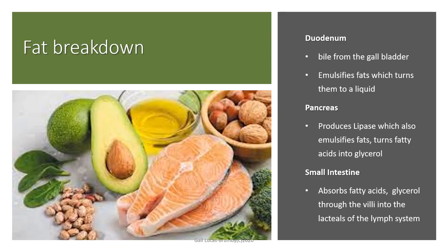To recap fat breakdown: nothing happens to fats in the mouth or stomach until we reach the duodenum. Bile, produced by the liver and stored in the gallbladder, emulsifies the fats, turning them to a liquid. Then lipase, produced by the pancreas and released into the duodenum, helps emulsify and break down the fats into fatty acids and then glycerol. In the small intestine, this is absorbed through the lacteals of the lymphatic system and then deposited into the bloodstream.